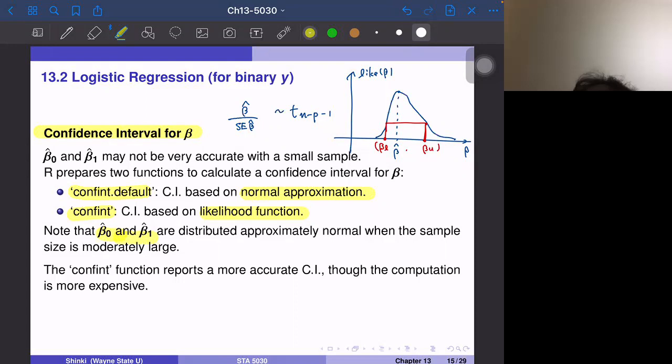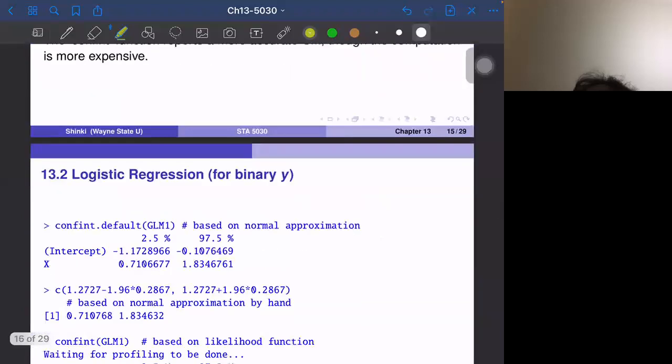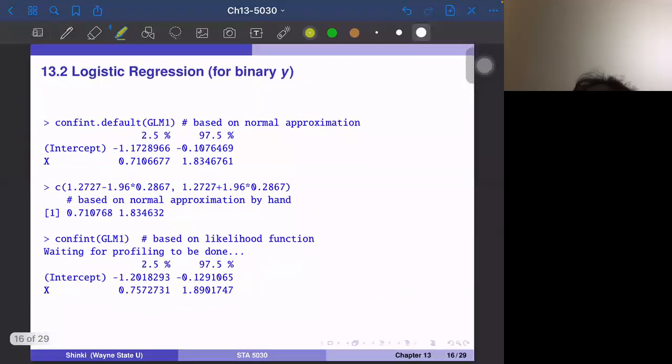The confidence function is more accurate, but it's more complicated and more computer intensive. Now let's see the confidence interval for beta naught and beta one.